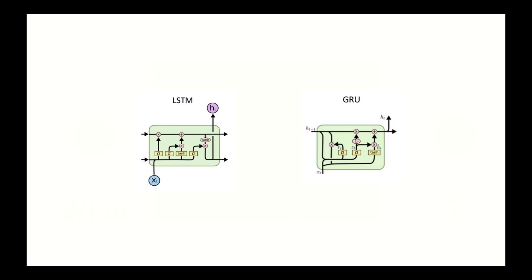One called long short-term memory, or LSTM for short. The other is gated recurrent units, or GRUs. LSTMs and GRUs essentially function just like RNNs, but they're capable of learning long-term dependencies using a mechanism called gates. These gates are different tensor operations that can learn what information to add or remove to the hidden state. Because of this ability, short-term memory is less of an issue for them.